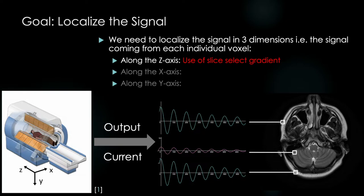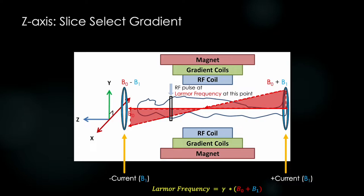In the previous lecture, we figured out a way to energize only a slice of the body with our RF pulse using a slice select gradient. We did this by adding an electromagnet at both the head and feet of the patient, running a reverse current through one and a forward current in the other, which created a linearly varying magnetic field from head to toe.